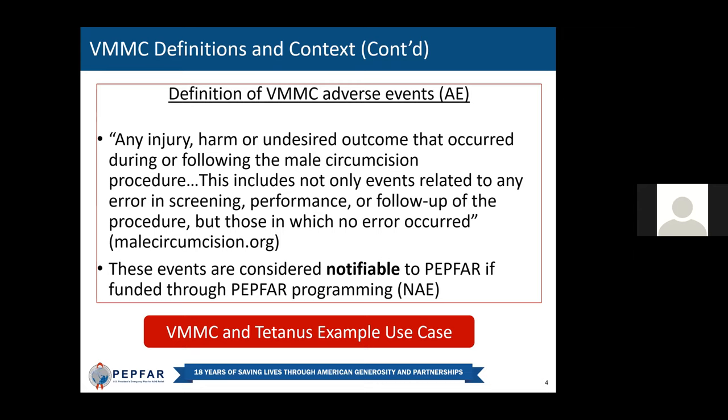An example use case comes from a decade ago involving VMMC and tetanus. There had been an increase in VMMC adverse events where tetanus was cropping up after procedures. While the WHO had been recommending a tetanus vaccination series through adolescence and young adulthood, it turned out these were predominantly provided for young women as part of maternal and neonatal tetanus elimination programs. As a result, a low proportion of males had tetanus immunity, especially in the age group seeking circumcision. Through adverse event reporting, investigation, and surveillance, PEPFAR worked with implementing partners, ministries of health, and WHO to implement tetanus mitigation strategies and add tetanus to the pre-screen for VMMC clients.